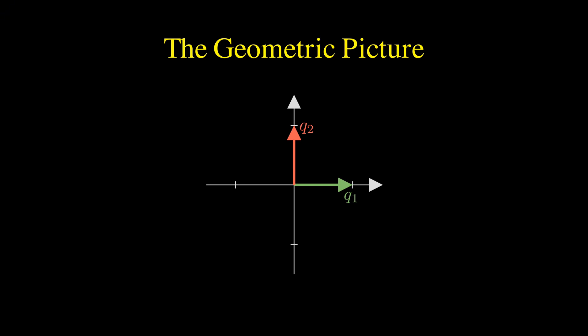These satisfy our conditions. Each has length 1, so the norm of Q1 equals the norm of Q2 which equals 1. And they are perpendicular, so their dot product Q1 dot Q2 equals 0.